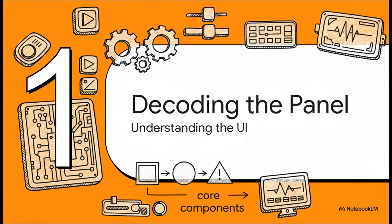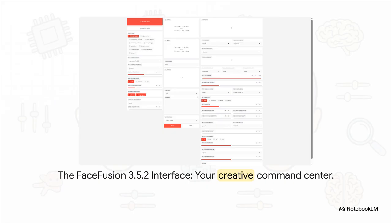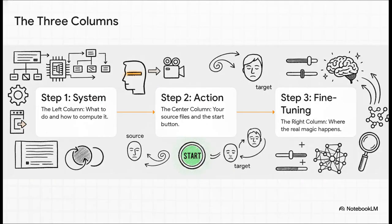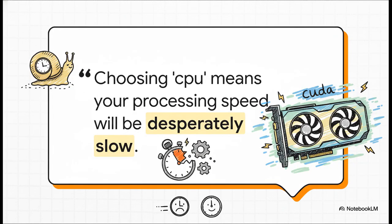Before we can even think about fixing problems, we have to understand the tools we're working with. Let's decode this whole control panel and break the interface down so it actually makes sense. Here it is — at first glance it can look a little intimidating, but it's actually set up in a really logical way. Think of it as your creative command center in three columns. The left column is the system stuff — what to do and how to do it. The center column is where you put your source face, your target video, and hit the big green start button. The right column is where the real magic happens — fine-tuning the AI's brain. The single most important setting for beginners: if you have an NVIDIA graphics card, you absolutely must select CUDA under execution providers. Leaving it on CPU means desperately, painfully slow processing — we're talking hours saved with one click.